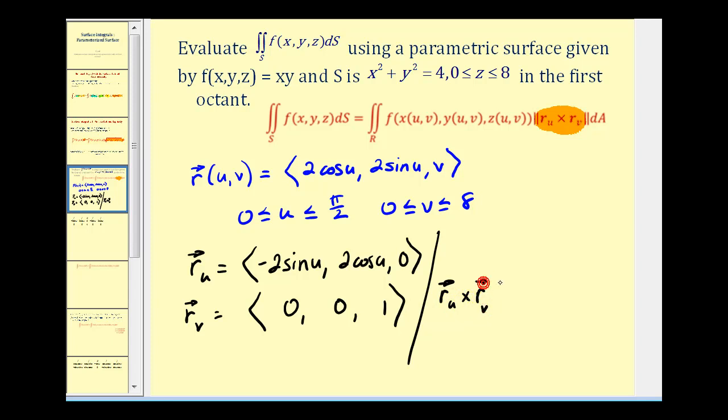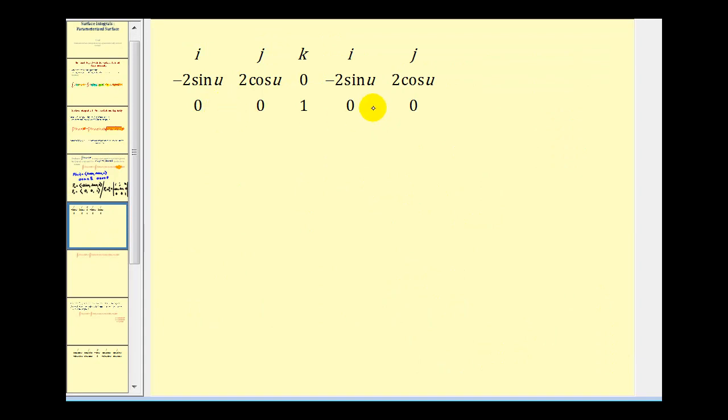So to determine the cross product of these two, we'll evaluate a three by three determinant where the first row is i, j, k. The second row will be negative two sine u. I'm going to evaluate this using the diagonal method. So I've already copied the first and second columns on the end. Now we'll sum the product of these three diagonals and then subtract the product of these three diagonals.